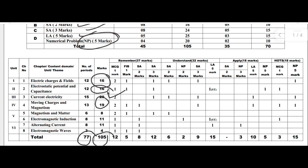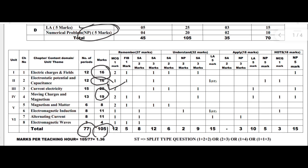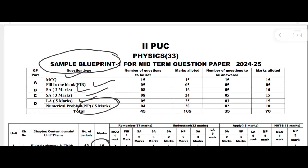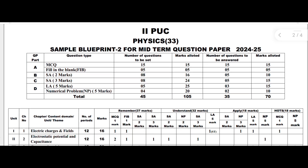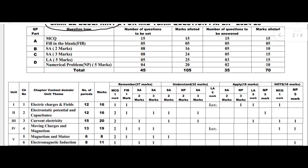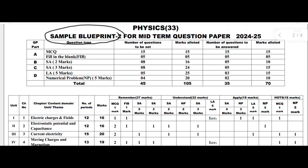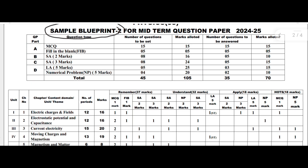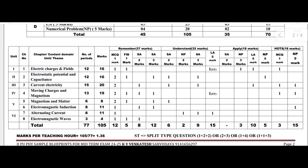The next blueprint is the second example blueprint for the midterm exam. Here also, the different sections are there, and these are the chapters again. The first eight chapters: electric charges and fields carries 16 marks.